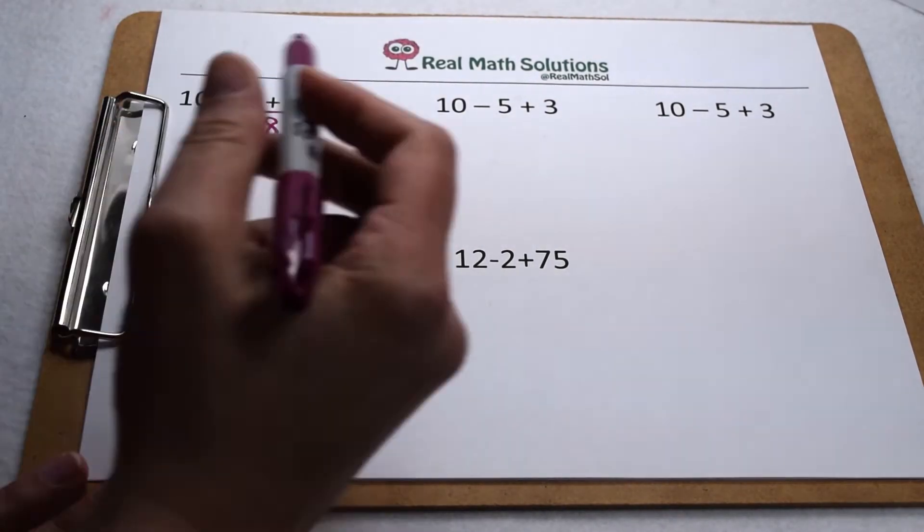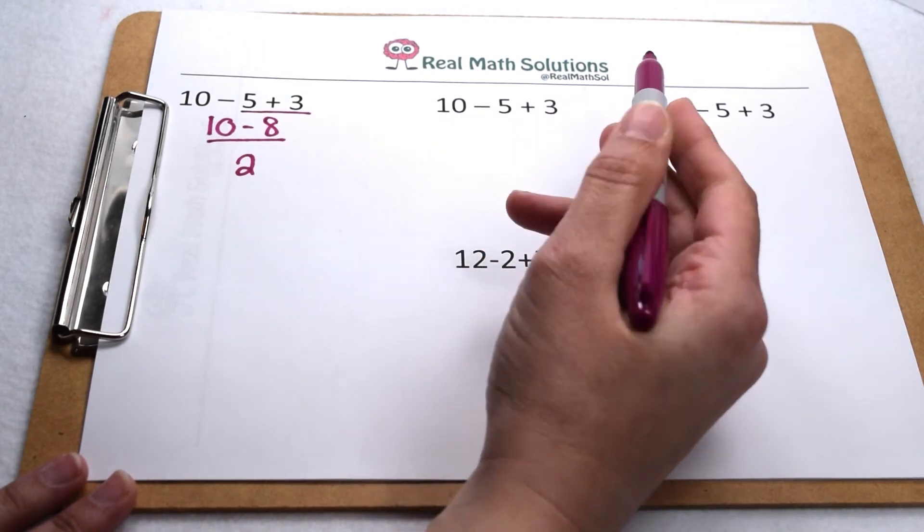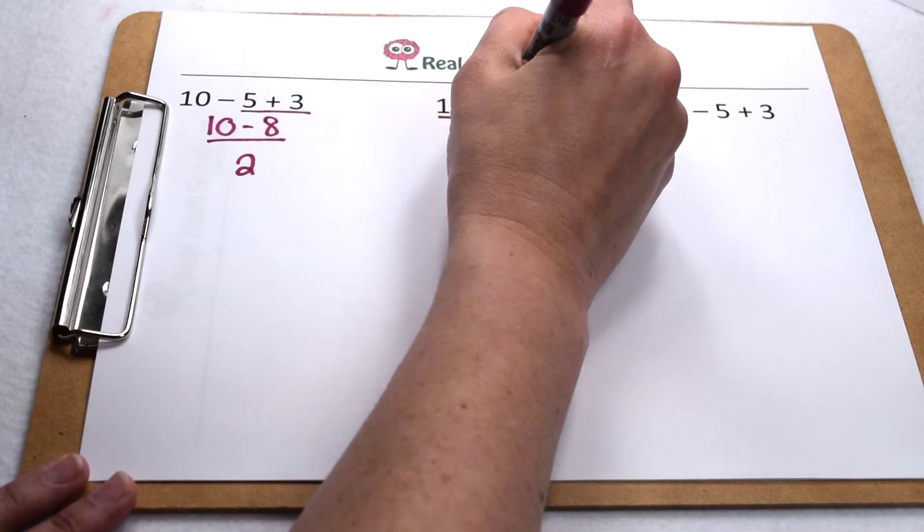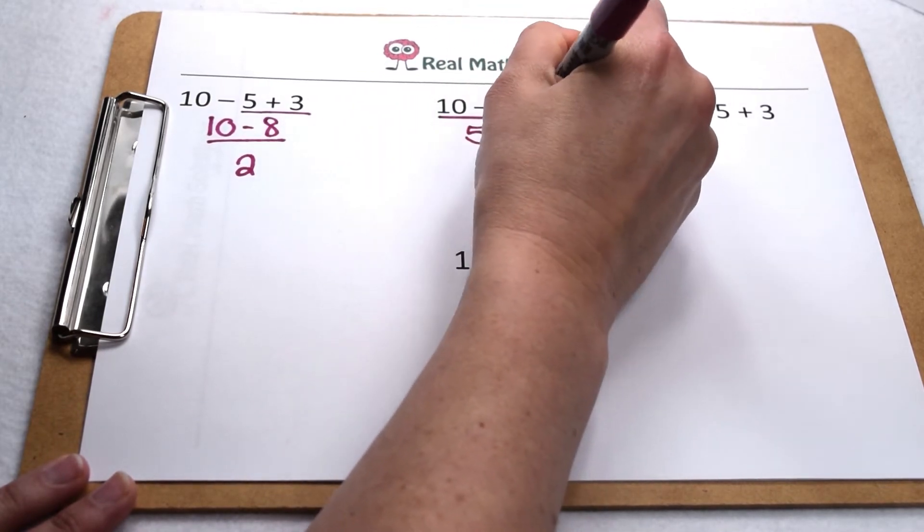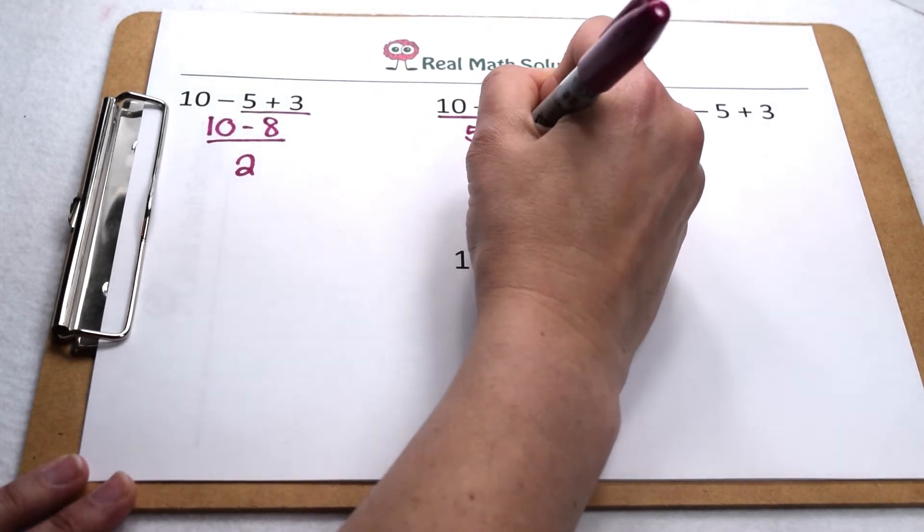On this next one, let's work left to right instead. That means subtraction is going to come before addition this time. So 10 minus 5 leaves me with 5, so now I have 5 plus 3 to finish off that problem. 5 plus 3 is 8. That's a very different result than 2.